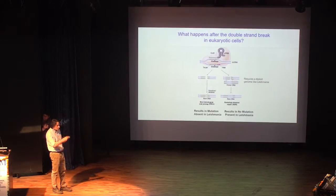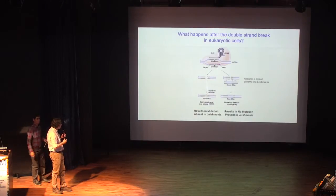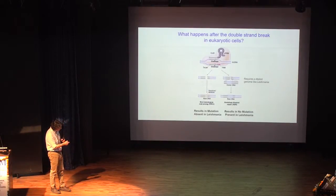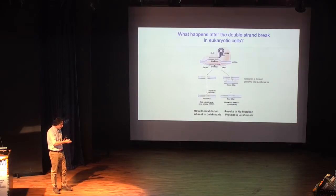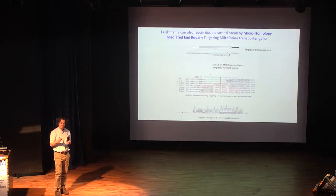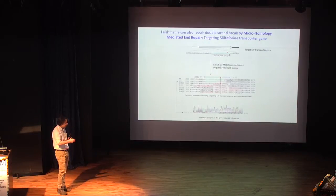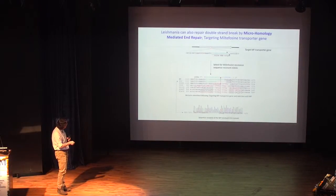What leishmania uses is the other mechanism — when you cut the genome, it uses the other chromosome, because leishmania is a diploid genome. It uses this as a template to repair the cut. We put the CRISPR system into leishmania, and the gene we targeted was the miltefosine transporter gene. Miltefosine is a drug developed to treat leishmaniasis. It's a very important drug, but you can get resistant to it if you mutate the transporter.